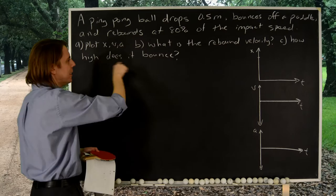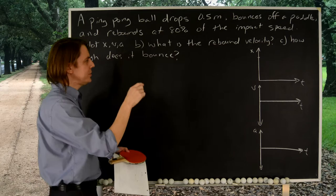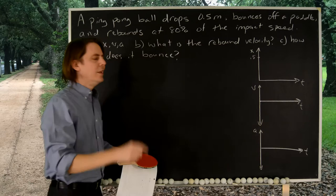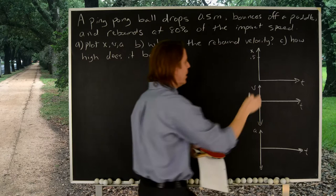Always start with a plot. Let's see, the position of a drop, it's going to drop from 0.5 meters, right there. And you know that it's going to start from rest, so the slope should start out flat. But then it's going to fall under gravity, so the slope will get more and more negative. So it'll have the familiar parabola shape.